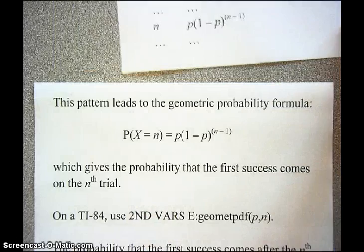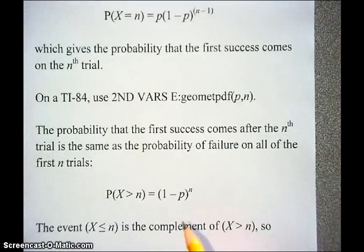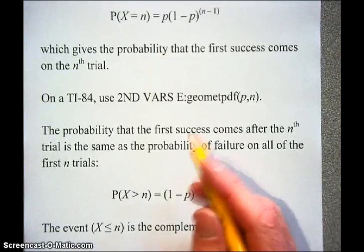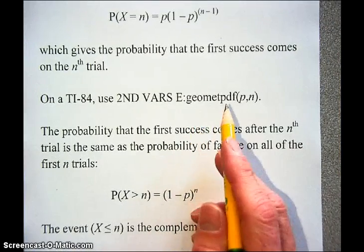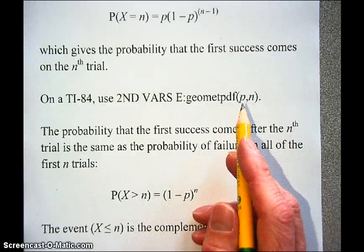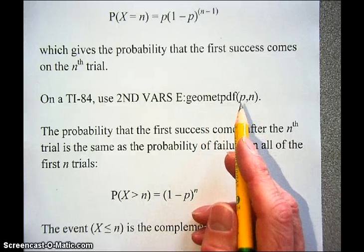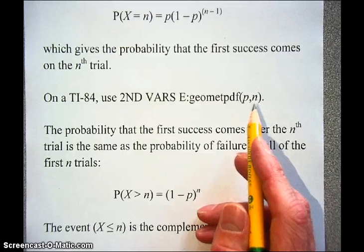You can calculate this probability on your calculator using 2nd VARS on a TI-84. It's geometric PDF — you put in the probability of success P and the trial you're interested in, N.